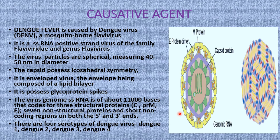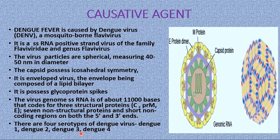There are four serotypes of dengue viruses: dengue virus 1, 2, 3, and 4. Dengue virus 1 was first isolated from Hawaii in 1944, and dengue virus 2 was isolated in the same year from New Guinea. Types 3 and 4 were isolated from the Philippines in 1956. One important thing to remember is that considerable cross-reactivity is observed among the different serotypes, and recovery from one serotype does not provide complete immunity against others. Thus, individuals can have as many as four dengue infections in their lifetime, one with each serotype.